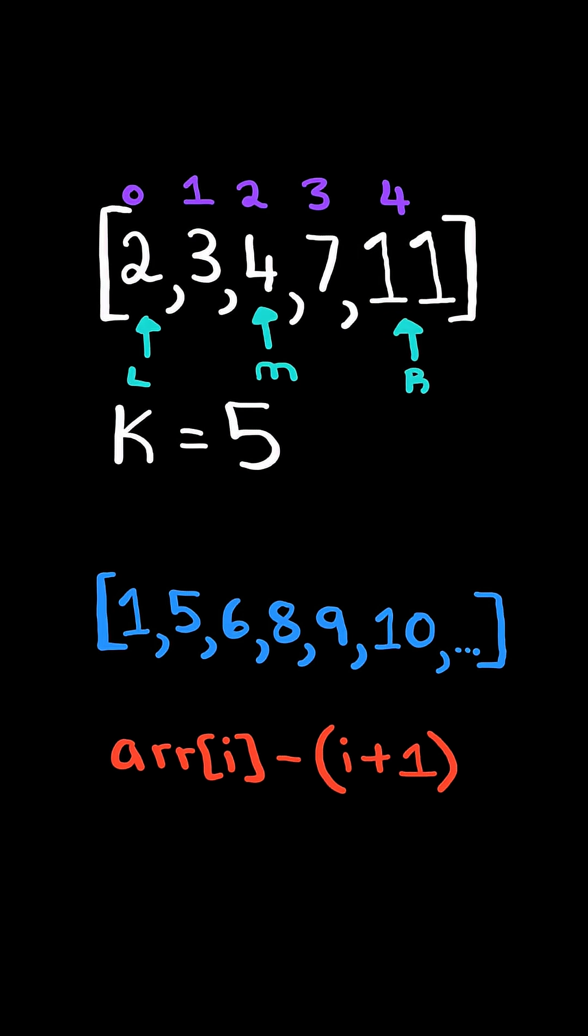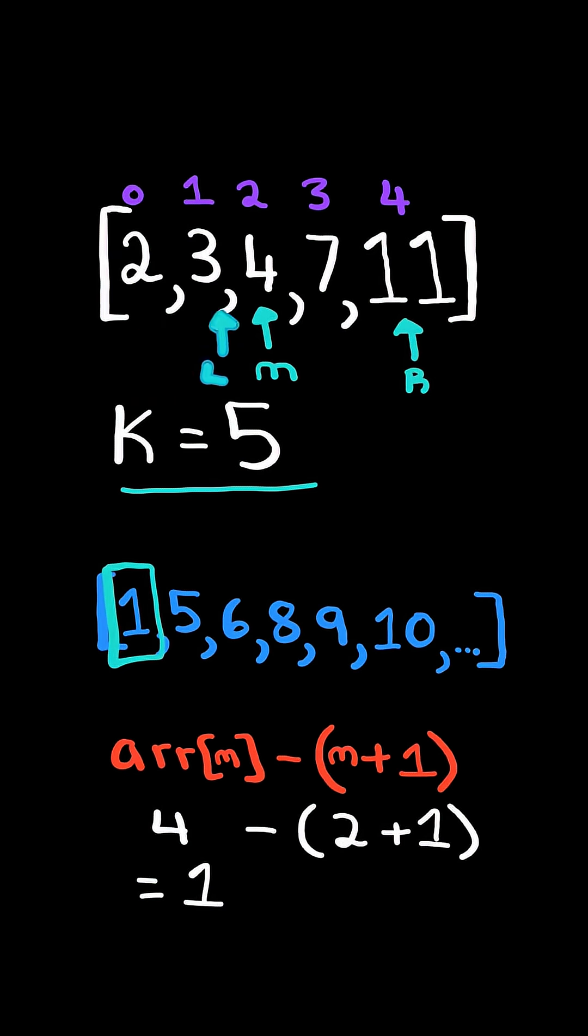Now we will have two pointers left and right. We calculate the midpoint and calculate the missing numbers from mid. There is only one number that is missing, and it's less than the fifth missing number we want, so we increment left to mid plus 1.